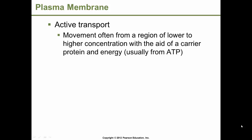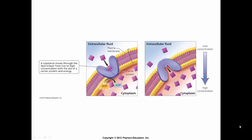Active transport facilitates going against the concentration gradient. It will use a carrier protein to facilitate this movement, but it will also require energy. This form of energy is typically from ATP, which is considered the energy source of the body — adenosine triphosphate. This is a diagram showing active transport moving a substance through the phospholipid bilayer, the plasma membrane, from an area of low concentration outside the cell in the extracellular environment to inside the cell — intracellular — within the cytoplasm, with the aid of a carrier protein and energy.